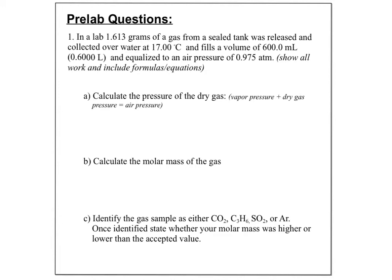I do disagree with that teacher on one point: inside the flask there is air pressure and also the vapor pressure of the water — water on the surface has a little pressure as some liquid turns to gas and back. If I'm going to use PV = nRT, I want only the pressure of the dry gas. I can't assume the air pressure equals the dry gas pressure, so I need to subtract the vapor pressure.